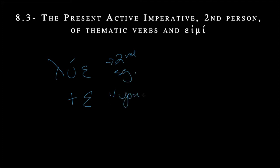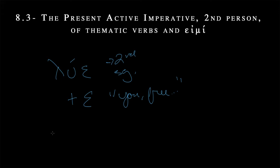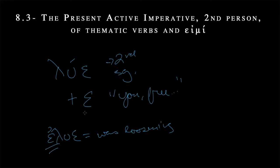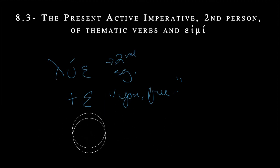This is for the second person singular — 'you, free.' That's the command. So it's close to third person singular 'he, she, it loosens.' And you might also be tempted to confuse it with elue, 'he/she/it was loosening.' But you can tell it's not imperfect because there's no past indicative augment. And this is a special ending — we haven't seen anything that looks exactly like lue before. You can always identify one of these second person singular imperatives: lue.